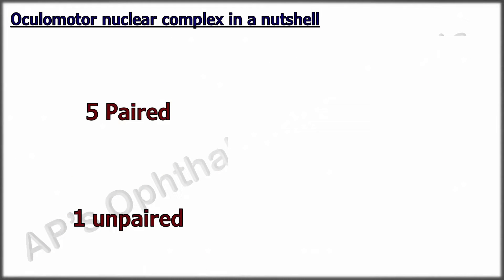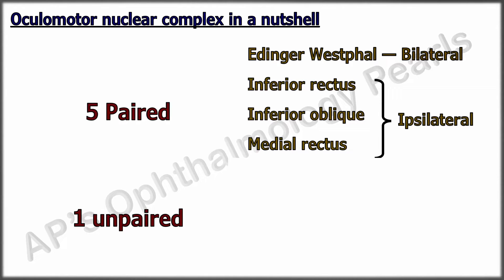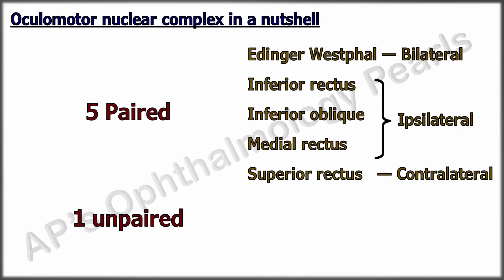To summarize the arrangement of the oculomotor nuclear complex: there are five paired subnuclei and one unpaired subnucleus. Among the paired are the Edinger-Westphal nuclei that contain bilateral input; the inferior rectus subnucleus dorsally; the inferior oblique in the intermediate column; and the medial rectus ventrally — all of which supply their ipsilateral respective muscles — and the superior rectus subnucleus medially, which supplies the contralateral superior rectus muscle. The unpaired single central caudal nucleus supplies both levators.